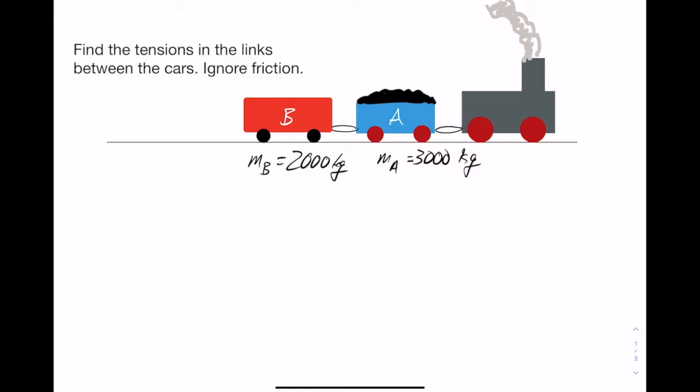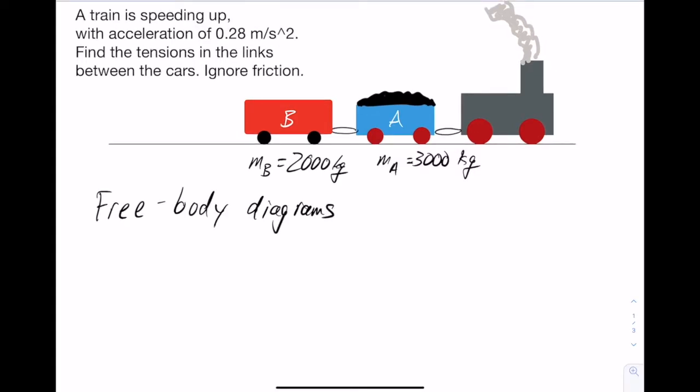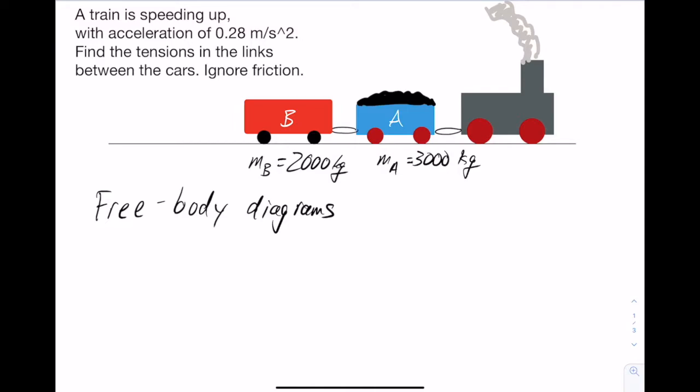So the first thing that we want to do is draw the free body diagrams for the two cars. We can start with car B just because it's to the left. And so we're going to have a force of gravity down. So I'll call it F sub G B. We're going to have a normal force up F sub N B. We're going to have a tension. So we need some labeling here. So I'll call that link two and then link one there. So there's going to be, we'll call that a force of tension, two. And then because we're neglecting friction, there is no backward force or force to the left on car B.